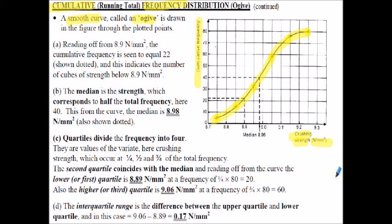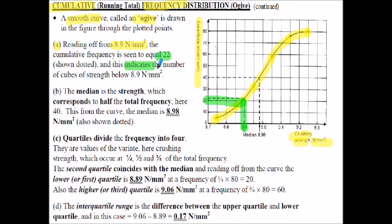We're now going to answer the questions. Part A wants us to read off the frequency associated with the stress level of 8.9 N/mm². On the horizontal axis we find 8.9 N/mm², we project a line up until it hits the diagram, then draw a line horizontally across and read off the frequency. The frequency in this case is equal to 22, indicating that 22 cubes have a strength below 8.9 N/mm².